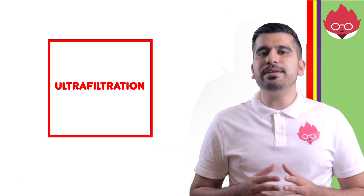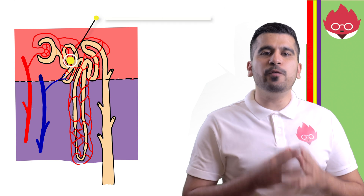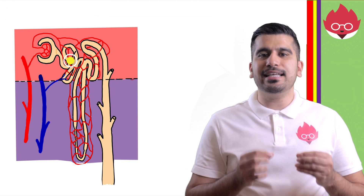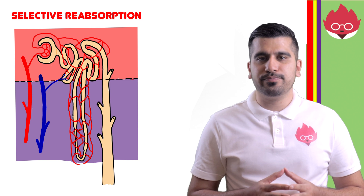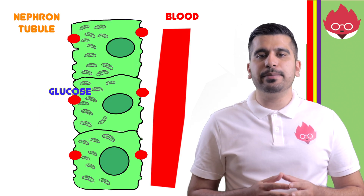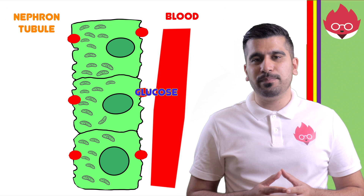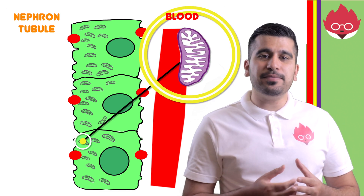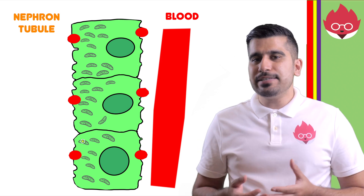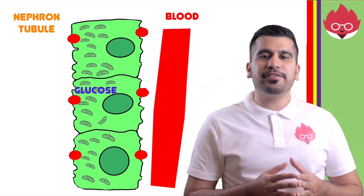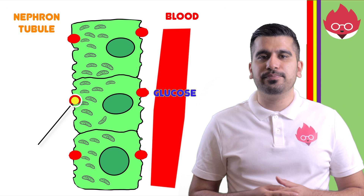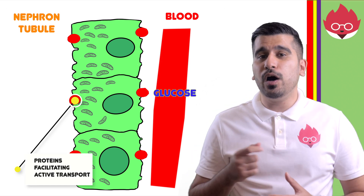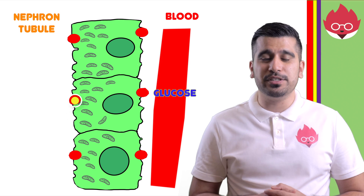The filtrate will then move towards the proximal convoluted tubule, where a process known as selective reabsorption occurs. Glucose is selectively reabsorbed by active transport. The nephron has lots of mitochondria, which provides energy for active transport. Selective reabsorption can only occur in this region of the nephron, as protein gates facilitating the active transport of glucose are only found in the proximal convoluted tubule.